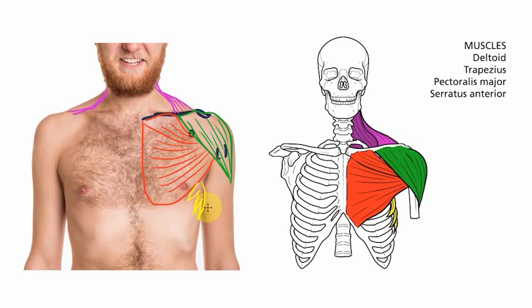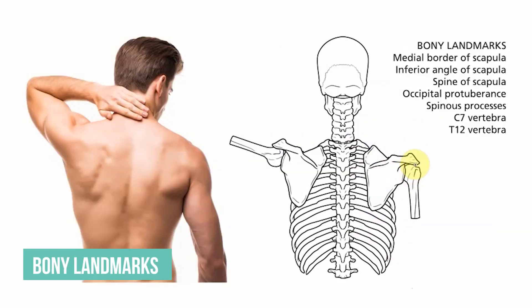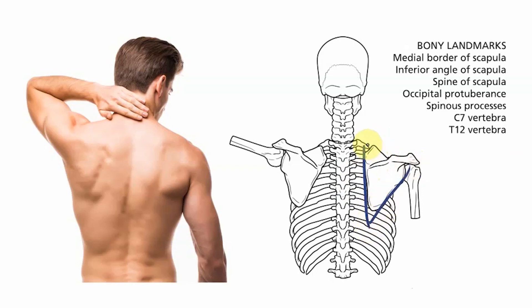Those are the muscles from the anterior view. Now let's head to our posterior view of the figure. We have our first two landmarks of the scapula — we're looking for the medial border and the inferior angle. The way to think about this is that the scapula is basically triangular in shape. That should tell us where the borders and angles will be: the medial border just here, the inferior border along here, the superior border up here, the superior angle at the top, and the inferior angle down here.